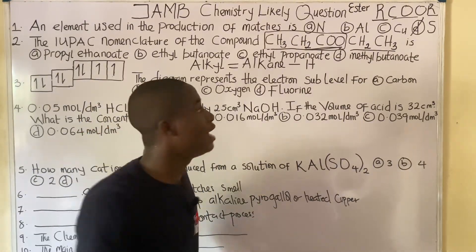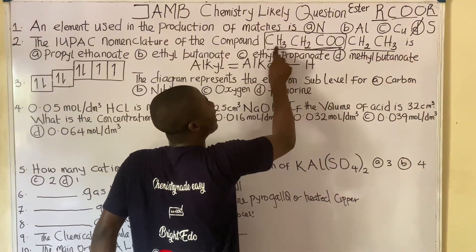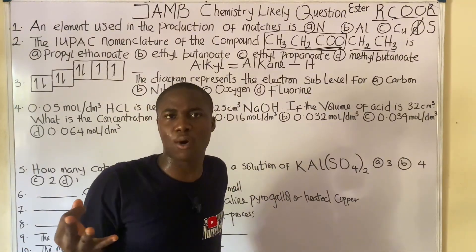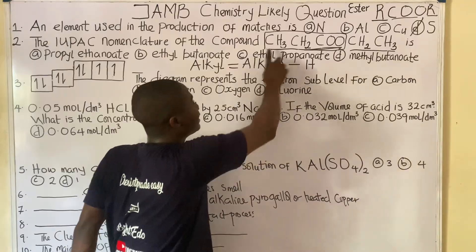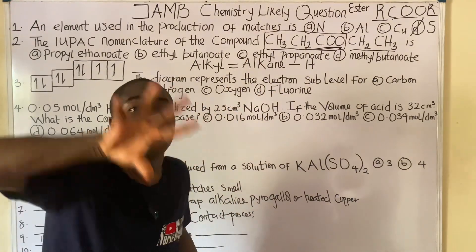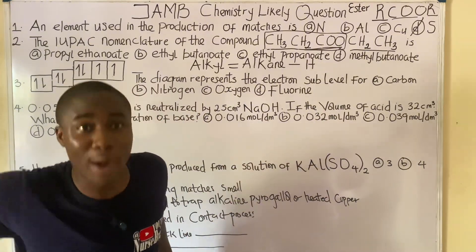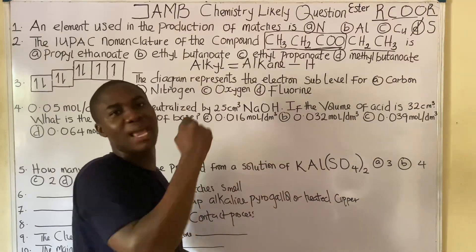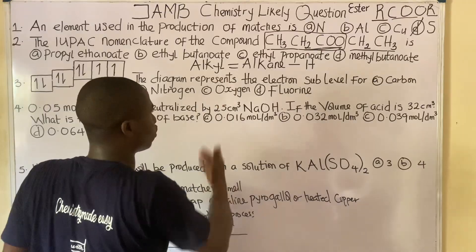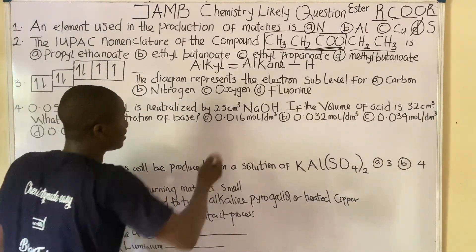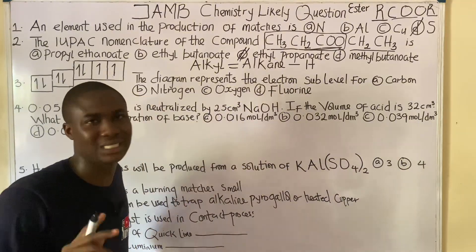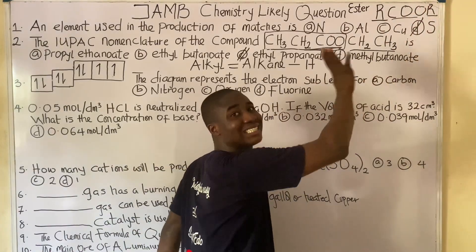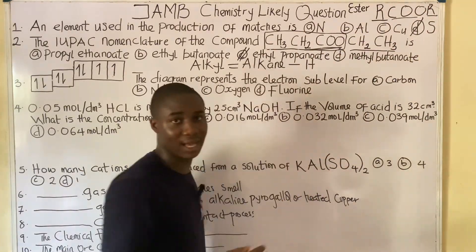Looking at the remaining part, we have one, two, three carbons. Three-carbon compounds are called prop-, and since esters are also called alkanoids, we call it propanoate. So the full name of this compound is ethyl propanoate. Checking the options, we find it as option C. Very easy — name the alkyl group first, then name the rest.